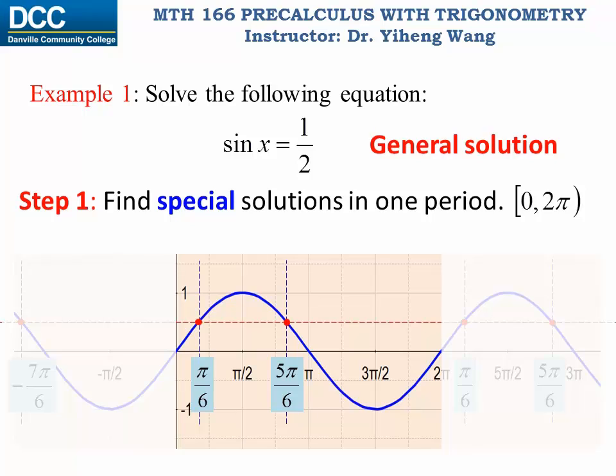Now as you can see, in this period there are only two solutions that satisfy this equation: x equals to pi over six, or x equals to five over six pi. And these are our special solutions.